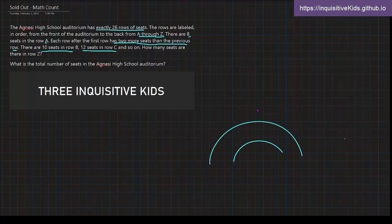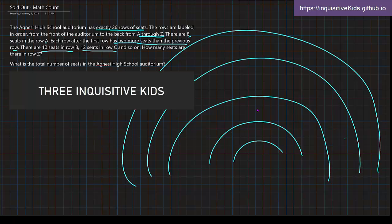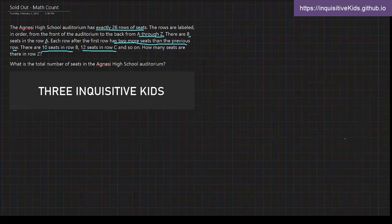So, what I'm imagining right here is this is the auditorium, and there's more and more seats. So, what we know is that there are 8 seats in row A. Each row, after the first row, has 2 more seats than the previous row. There are 10 seats in row B, 12 seats in row C, and so on.